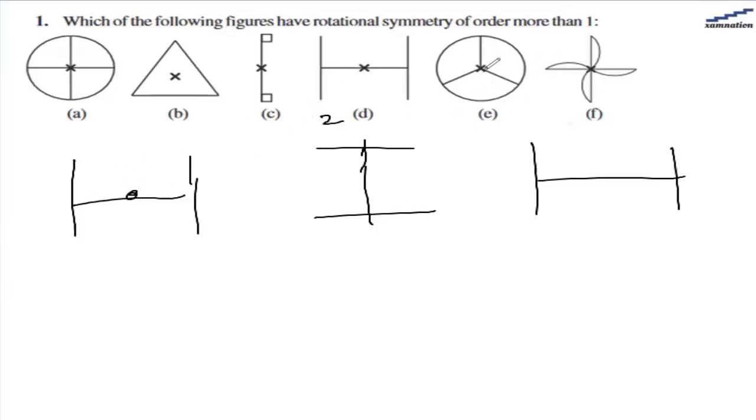This figure is a circle with 3 lines. These lines are basically 120 degrees apart, which means this has order 3. After every 120 degrees, this figure will repeat itself. The next figure has order 4.